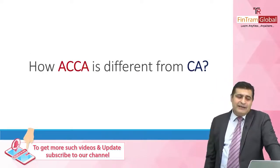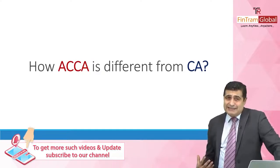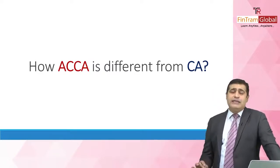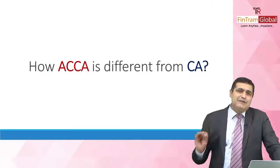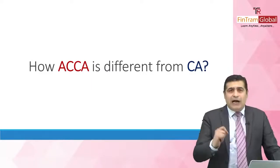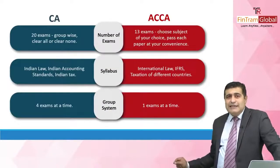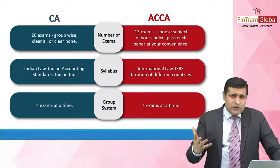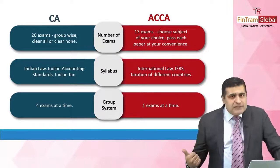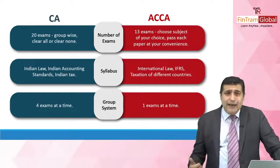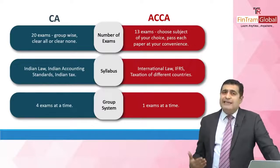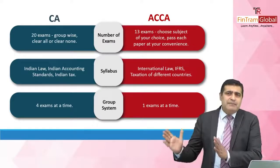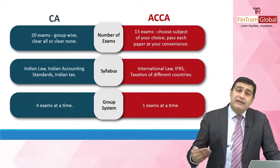Now, how is ACCA different from CA? CA has approximately 20 exams that everyone has to clear in the group system. ACCA has 13 exams, and you can choose the subject you want to give in a particular bucket — they have 3 buckets. You can clear these exams one by one. CA is based on Indian laws and Indian accounting standards, whereas ACCA is based on IFRS and global or UK taxation.